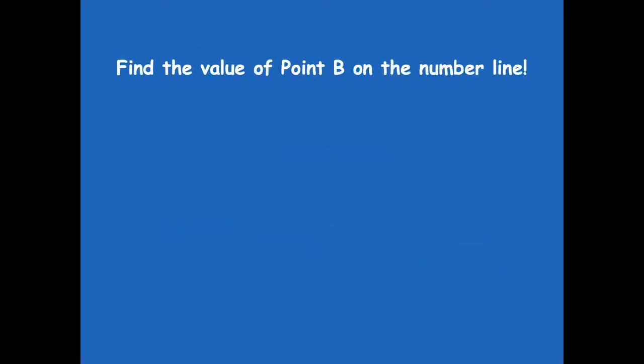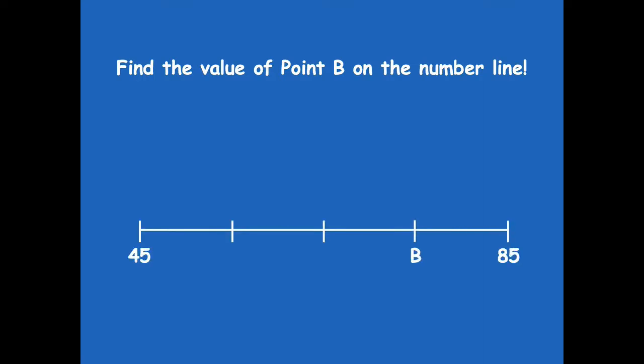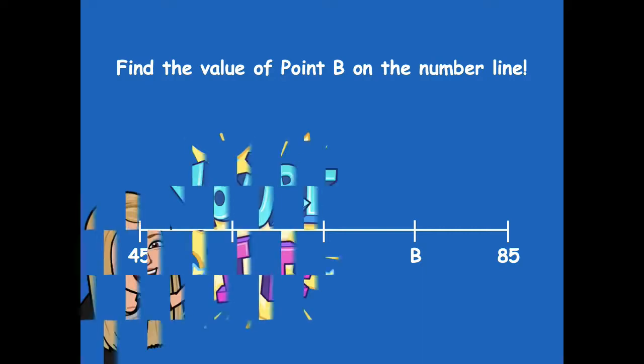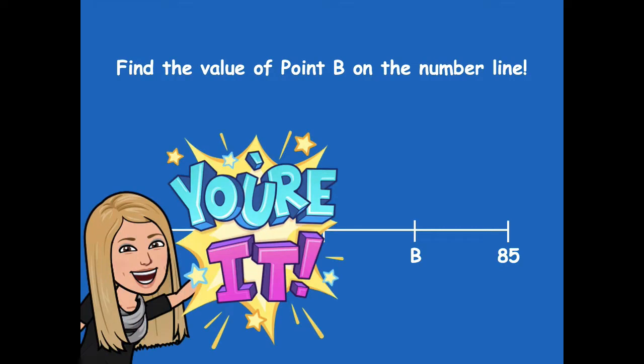Our next problem says: find the value of point B on the number line. This time they're not telling you what the units are — you have to figure that out. Remember, we've been working with units that have either been a length of 5 or 10. Use those to figure out how you can determine the value of point B. Pause the video, find the value of point B, and then click play when you're ready.